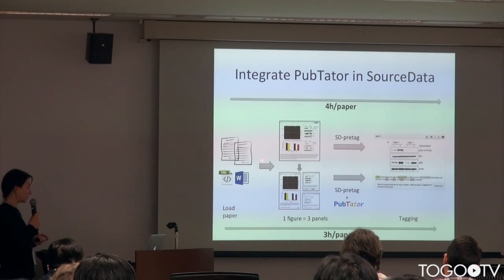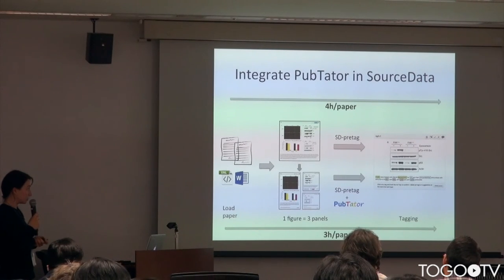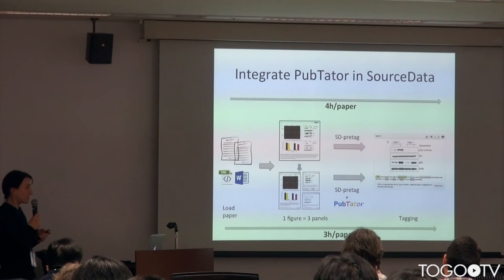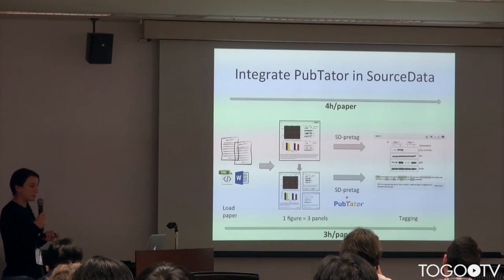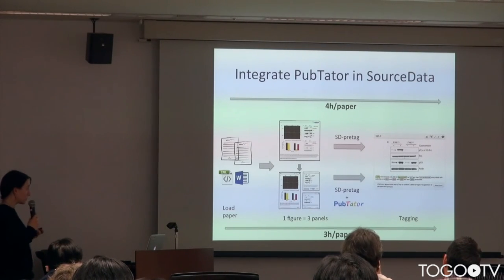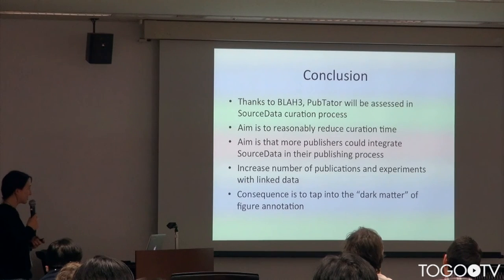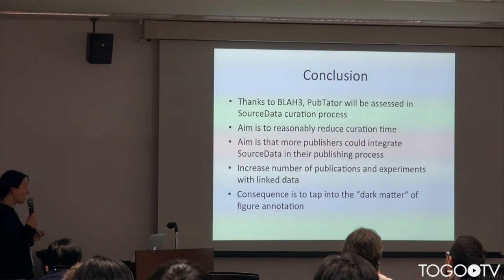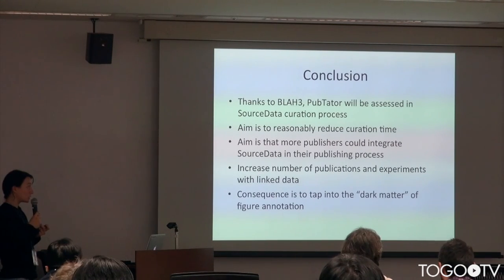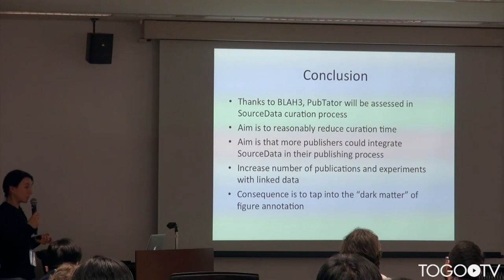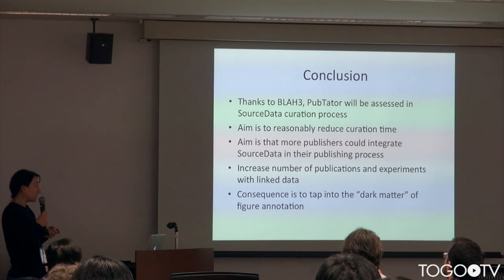That's why we will try to integrate Peptator as a pre-tagging system, in addition to our existing pre-tagging system, to help improve and reduce the curation time — maybe from four to three hours. It's not a huge difference, but it can make the process more scalable. We really want to reduce this curation time so that more publishers can integrate SourceData into their publishing process, increasing the number of publications and experiments with linked data to tap into the dark matter of figure annotation.